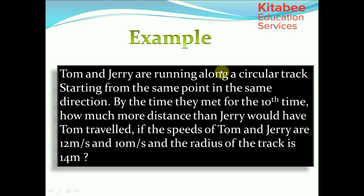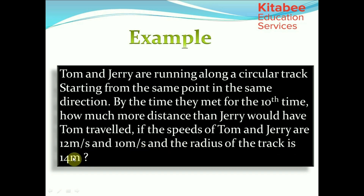Next example: Tom and Jerry run along a circular track starting from the same point in the same direction. By the time they meet for the 10th time, how much more distance than Jerry would Tom have traveled? The speeds of Tom and Jerry are 12 meters per second and 10 meters per second, and the radius of the track is 14 meters.